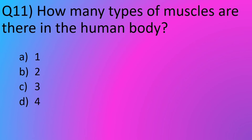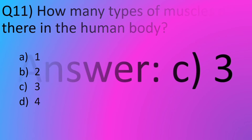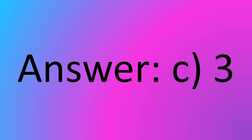Question No. 11: How many types of muscles are there in the human body? Option A: 1. Option B: 2. Option C: 3. Option D: 4. The answer is Option C: 3.